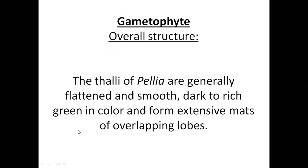Looking at the overall gametophyte structure, Pellia is generally flattened. All Hepaticopsida members are dorsiventrally flattened, but not all — some members are leafy, looking like a leaf, like Porella. The thalli of Pellia and Marchantia are flattened; Riccia is also flattened. The thallus of Pellia is generally flattened, smooth, and dark green in color. The overlapping mats, when looked at in hand, are thick.